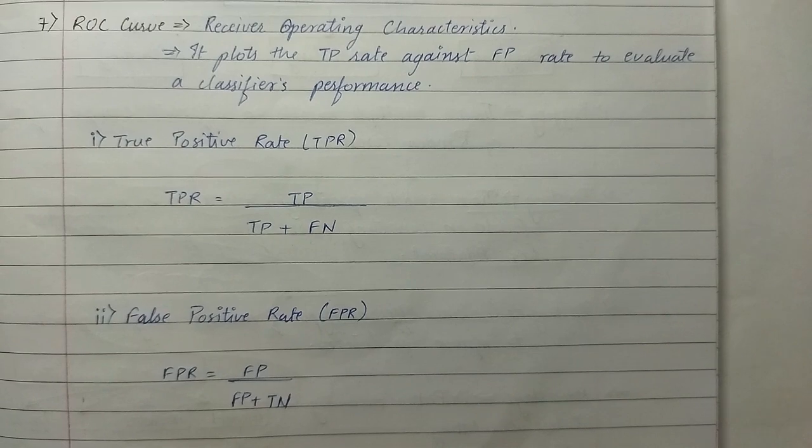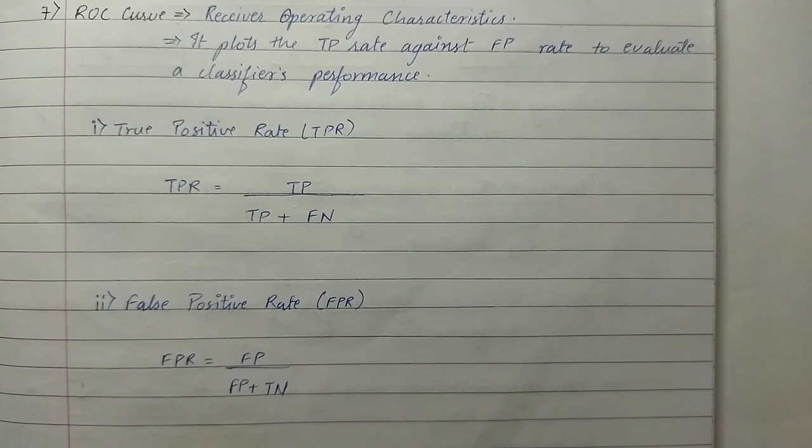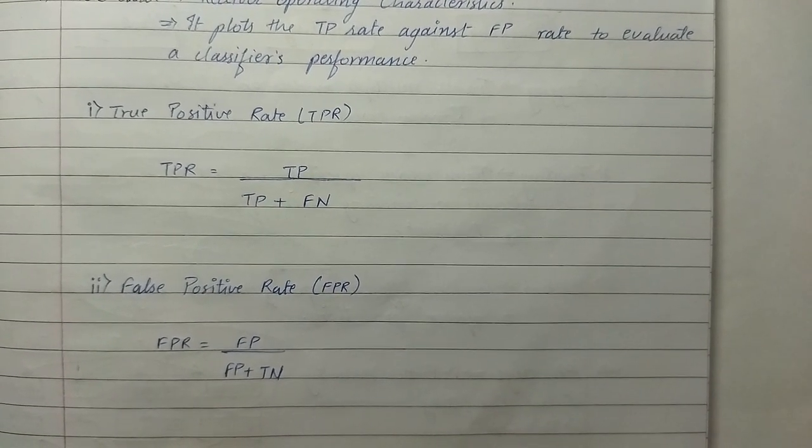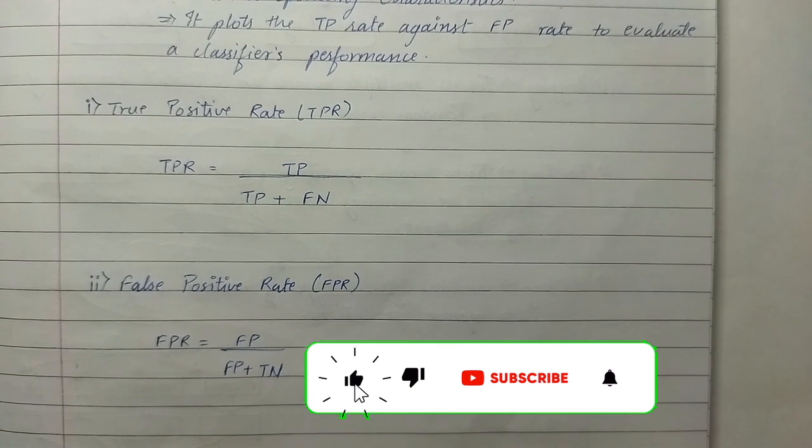For true positive rate TPR, the formula is true positive upon true positive plus false negative. For false positive rate FPR, the formula is false positive upon false positive plus true negative.